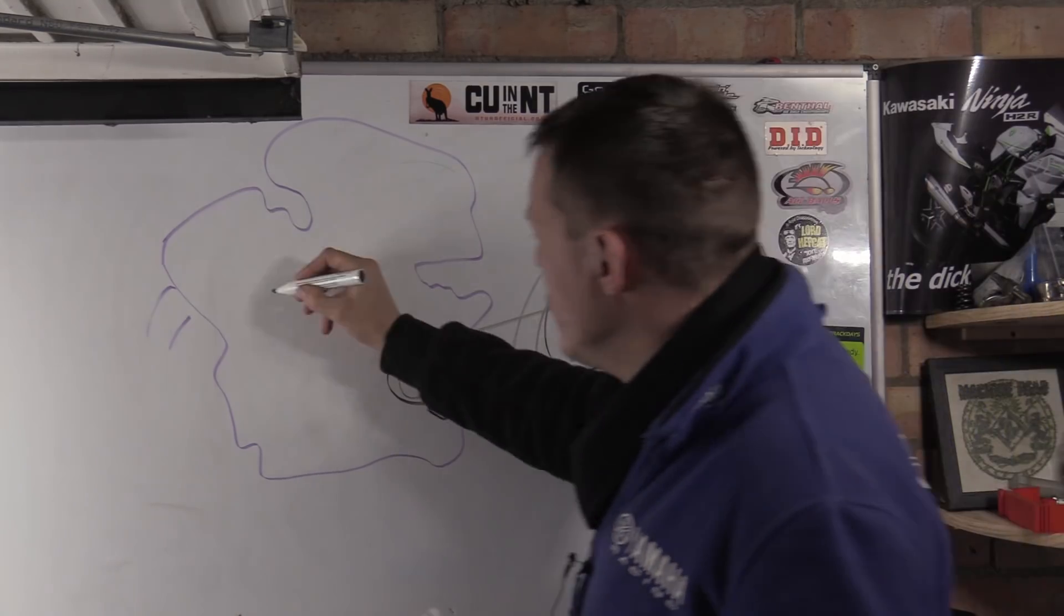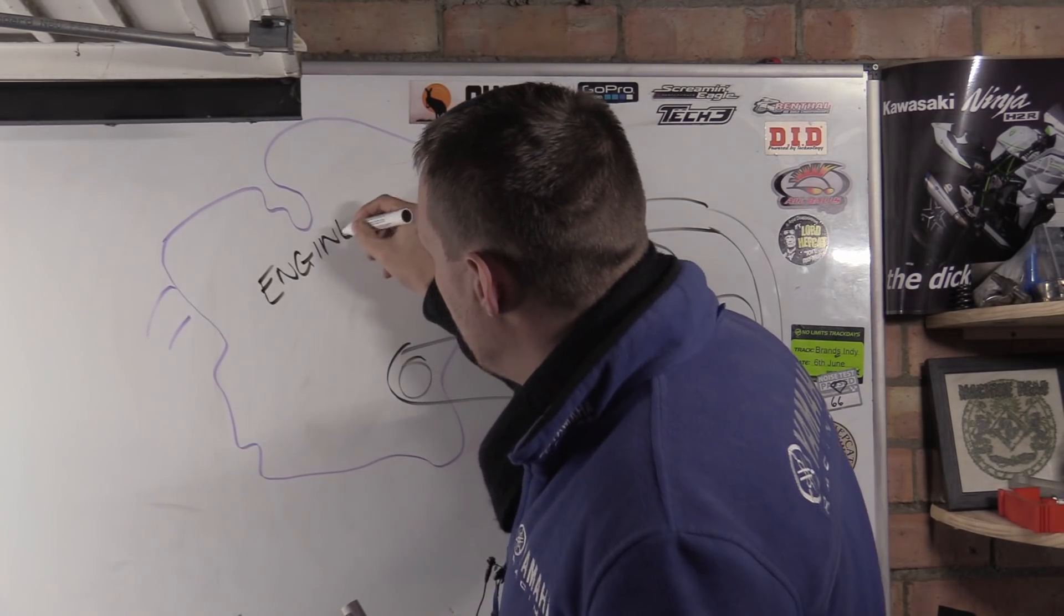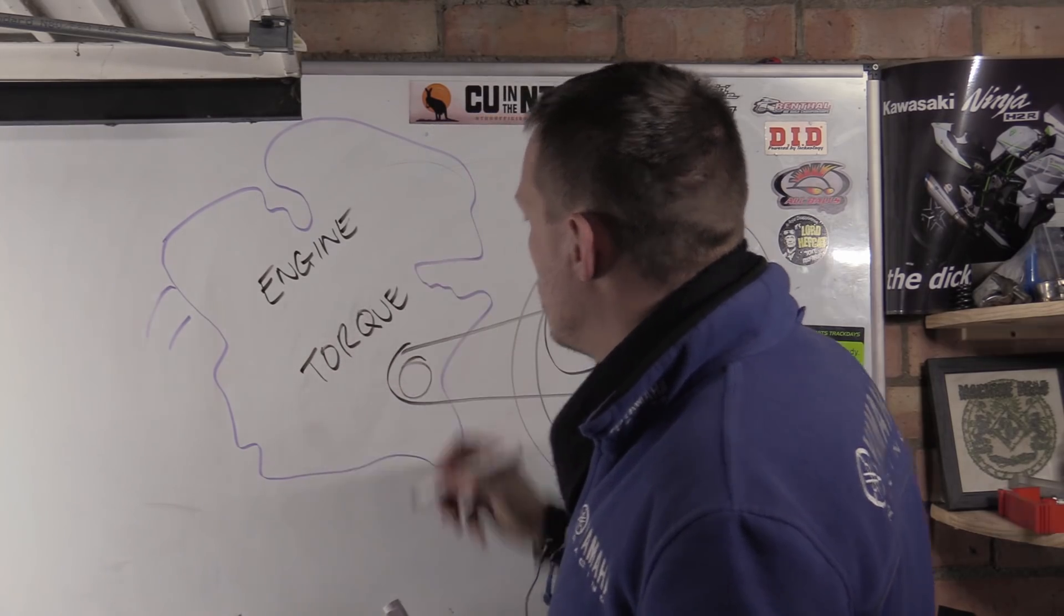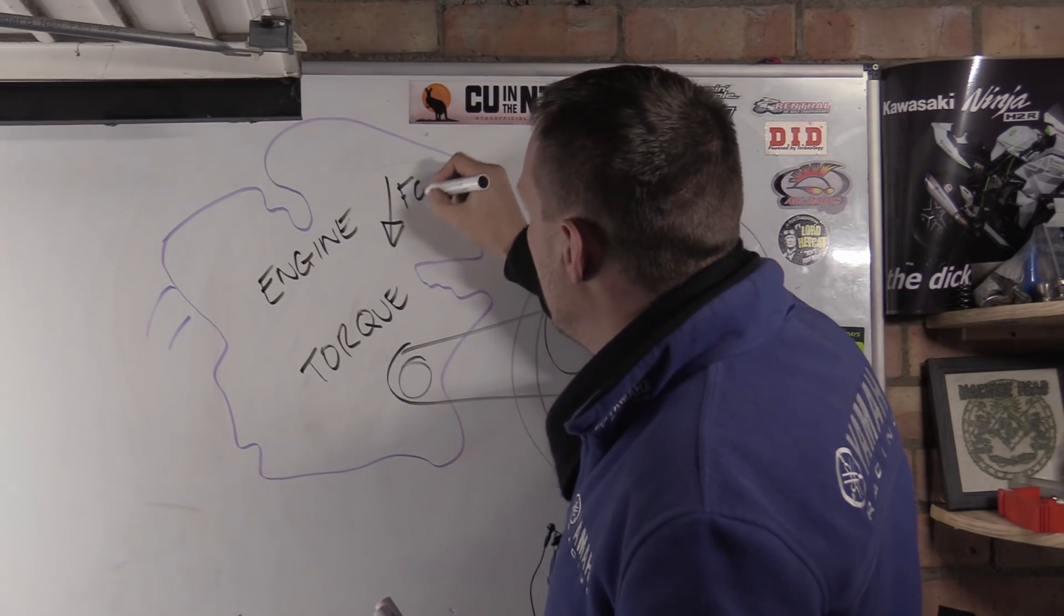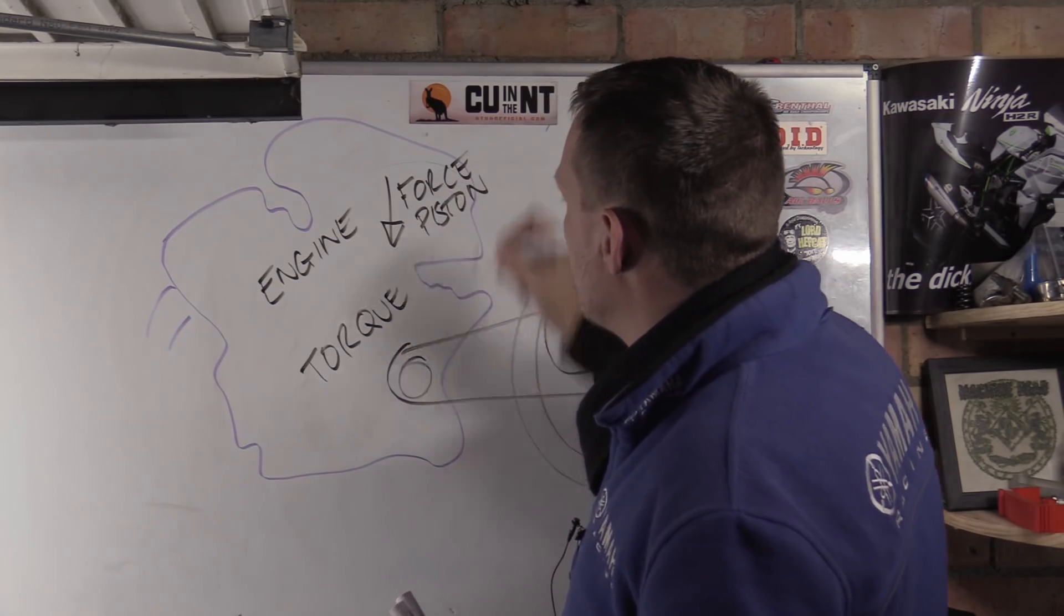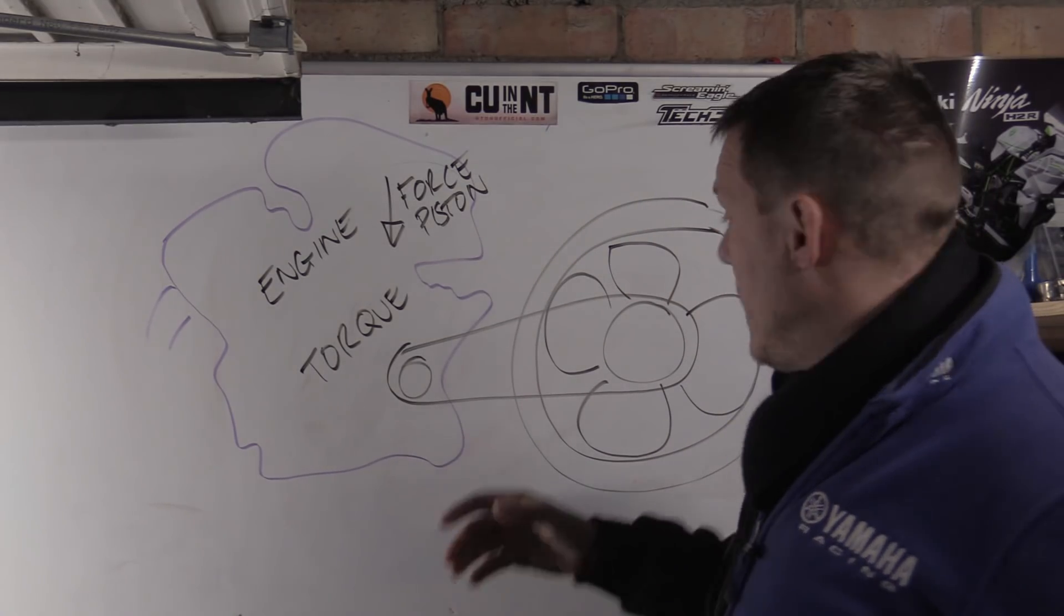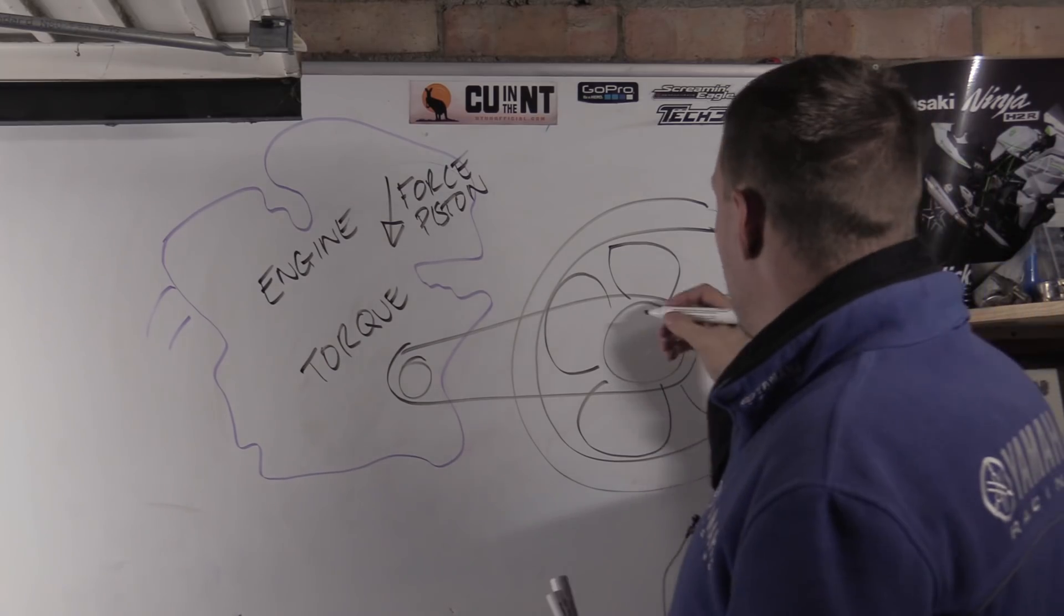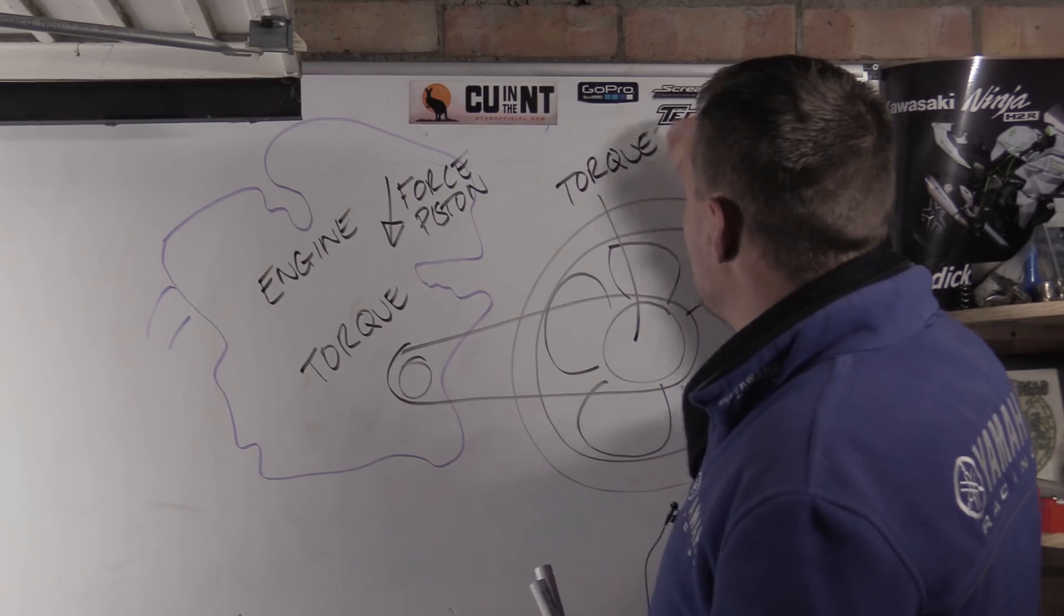So some of you might have said engine, that's what does it. Some of you might have said, well it's actually the torque. Some of you might have even said it's the force from the piston, so just say piston, the force that's applied to the piston. Some people might have said fuel, combustion, whatever. And some of you might have said the tyre, the gear ratios, whatever. Some of you might have said, well it's the torque at the rear wheel, something like that.